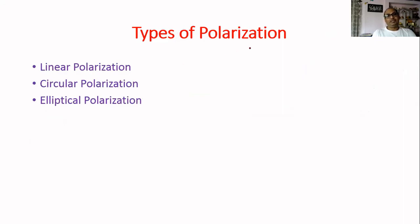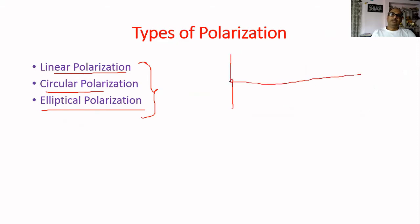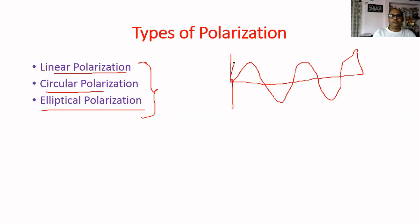Types of polarization: there is linear polarization, circular polarization, and elliptical polarization — three types. In linear polarization, the waves, both electrical and magnetic, will be confined to one particular direction with no phase difference between them. That is called linear polarization.